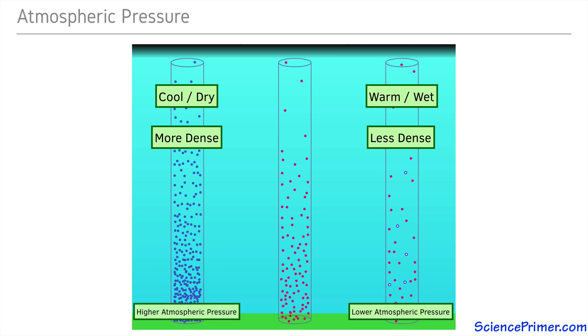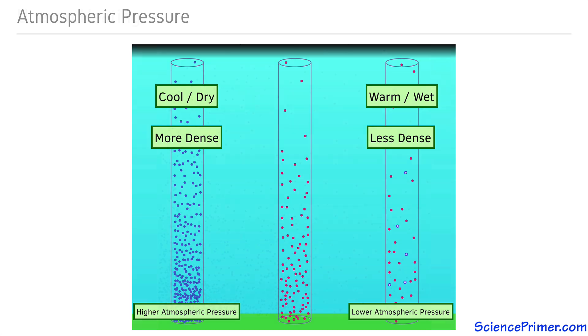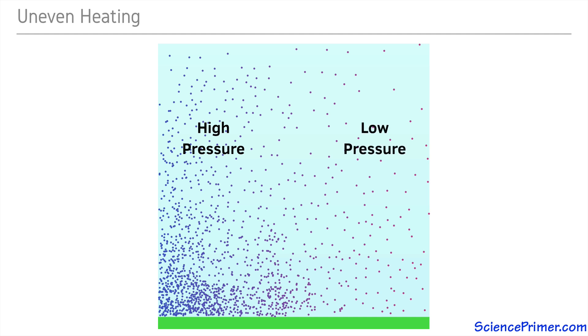Atmospheric pressure increases as gas in the atmosphere cools and loses water vapor to precipitation. Uneven heating and varying amounts of water vapor in the atmosphere results in regions of high and low pressure.